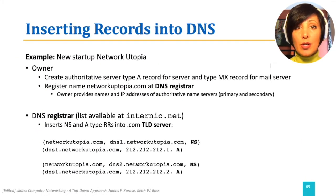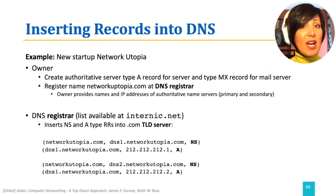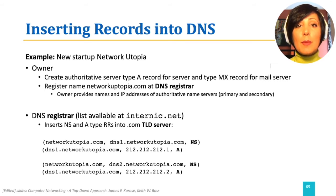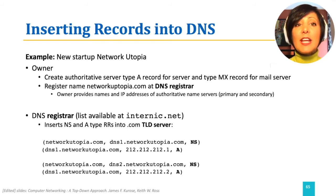One thing not yet mentioned is how a new record gets disseminated in the DNS distributed database. When you want to have a hostname for your server, for example networkutopia.com, you need to register it at a DNS registrar. You can find the list of registrars at internic.net. A DNS registrar is a commercial entity that ensures the requested domain name is unique, then enters the corresponding record into the DNS system. You need to provide the hostnames and IP addresses of the primary and secondary authoritative DNS servers to the DNS registrar.